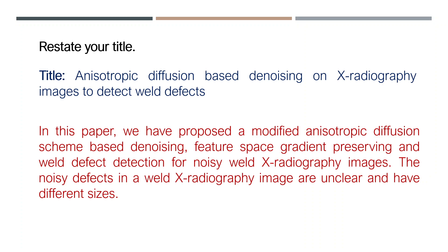Here I am giving an example of how to construct a conclusion section with different aspects. The first one is restate your title. This example is adopted from one of my published papers. The title of the paper is: 'Anisotropic diffusion-based denoising on X-ray radiography images to detect quality defects.' Based on this title, I am going to elaborate it in the conclusion section. Here I mentioned: in this paper, we have proposed a modified anisotropic diffusion scheme-based denoising with feature space gradient preserving and weld defect detection.